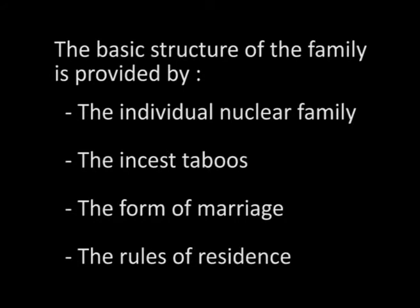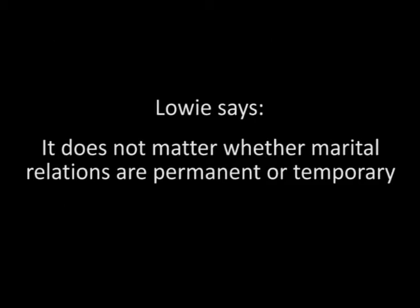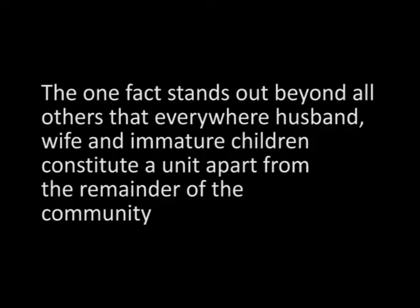The enjoyment of sex has been given the same importance as the fulfillment of Dharma. We now know how the family system originated. Now let us look at the structure of the family. The basic structure of the family is provided by the individual nuclear family, the incest taboos, the form of marriage and the rules of residence. Individual nuclear family is of significant importance. As Lowie writes, it does not matter whether marital relations are permanent or temporary, whether there is polygamy or sexual license, whether conditions are complicated by the addition of members not included in our family circle.